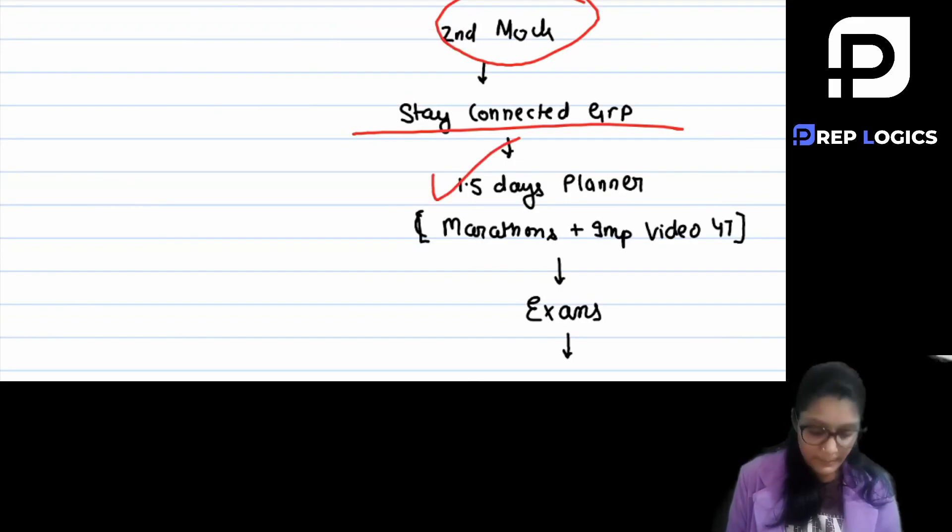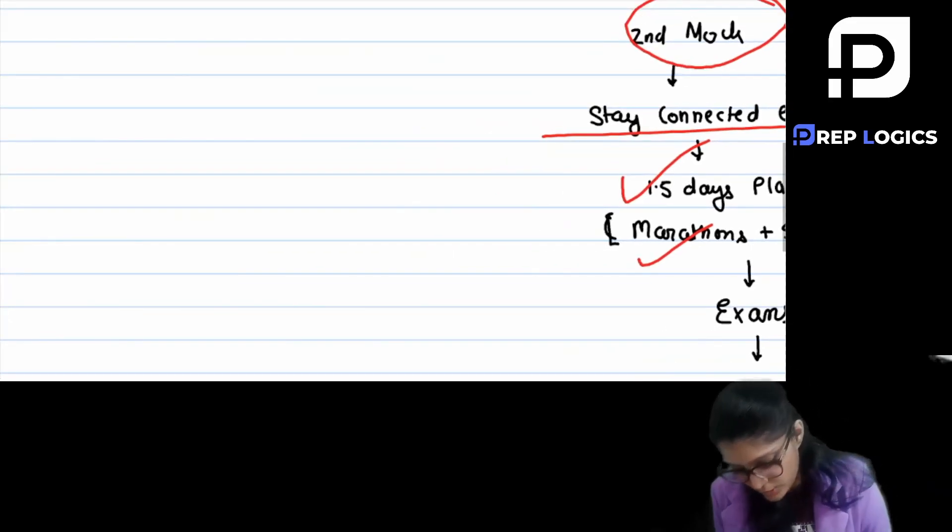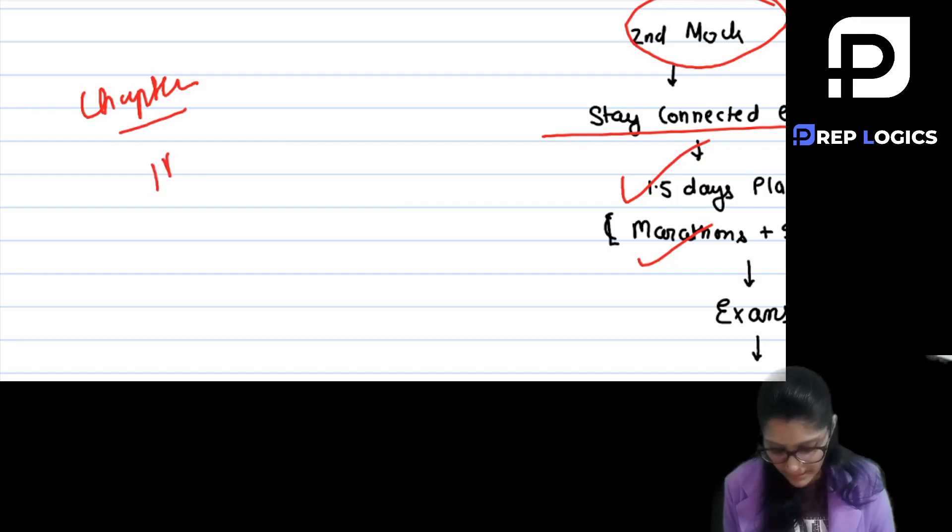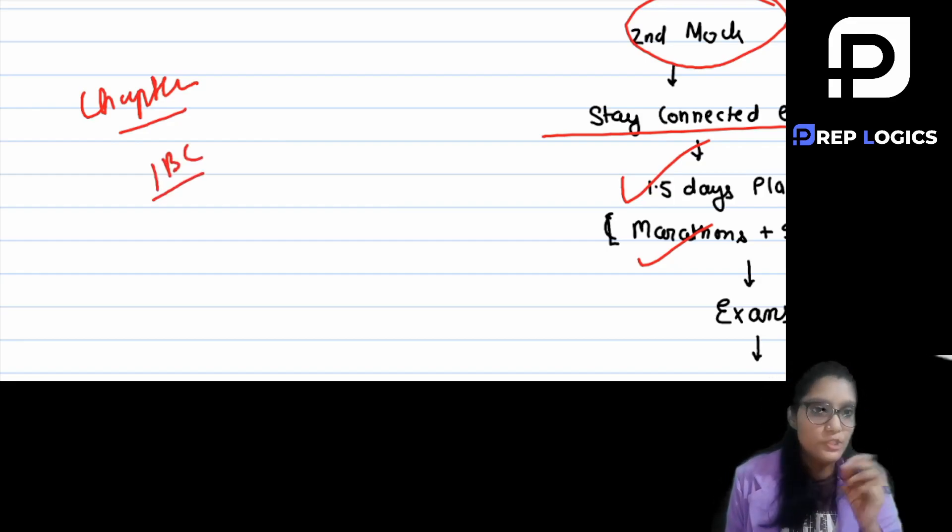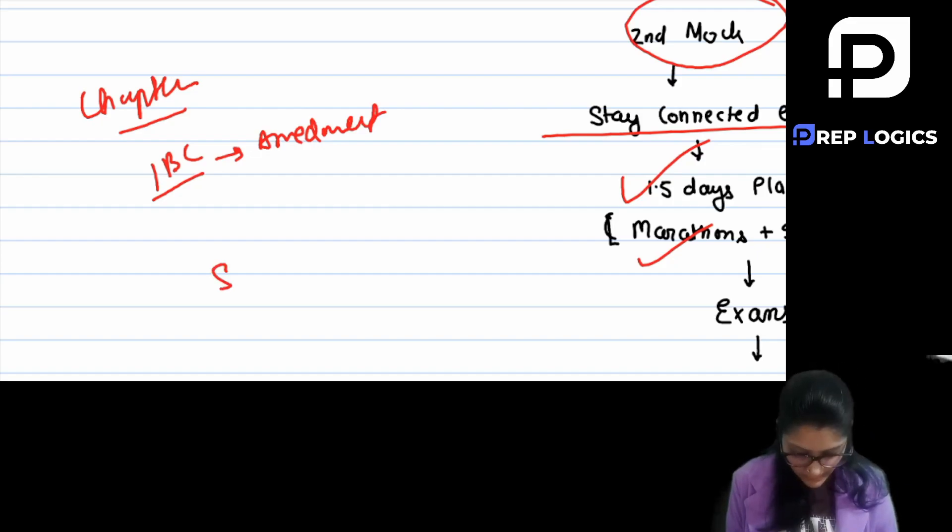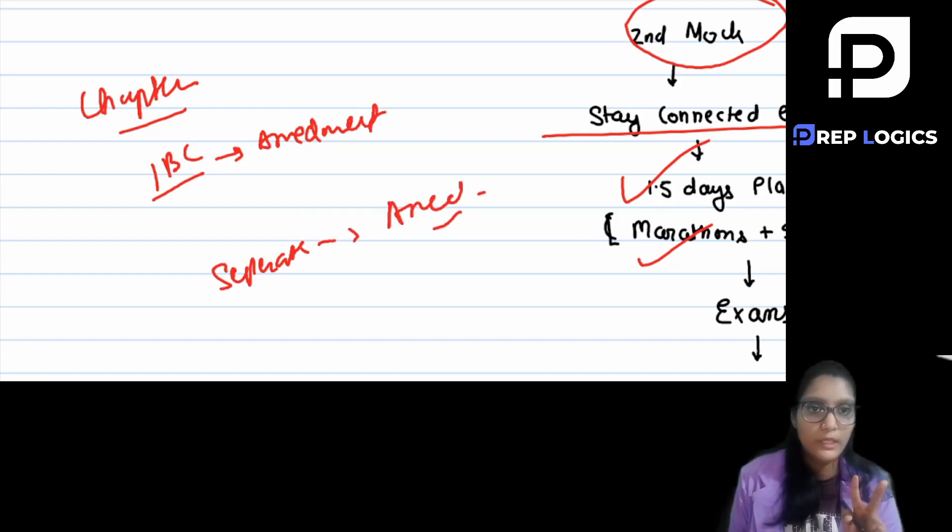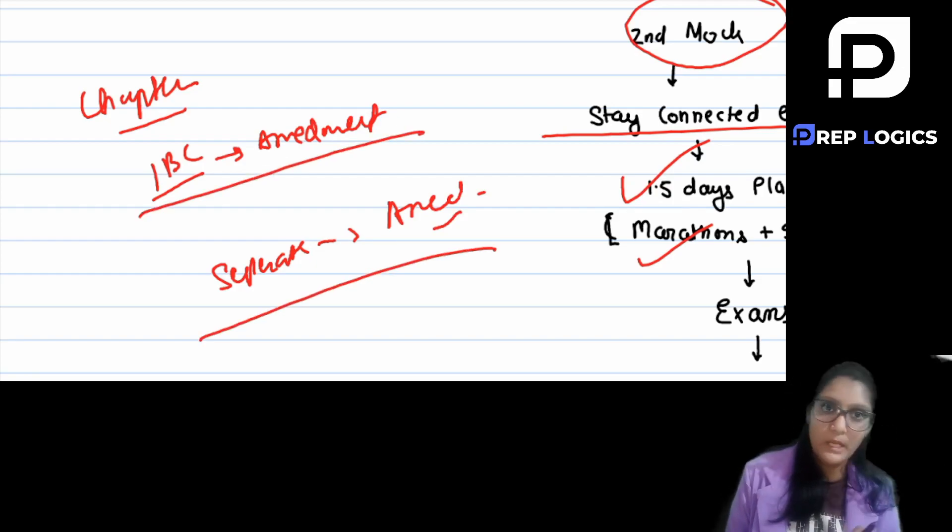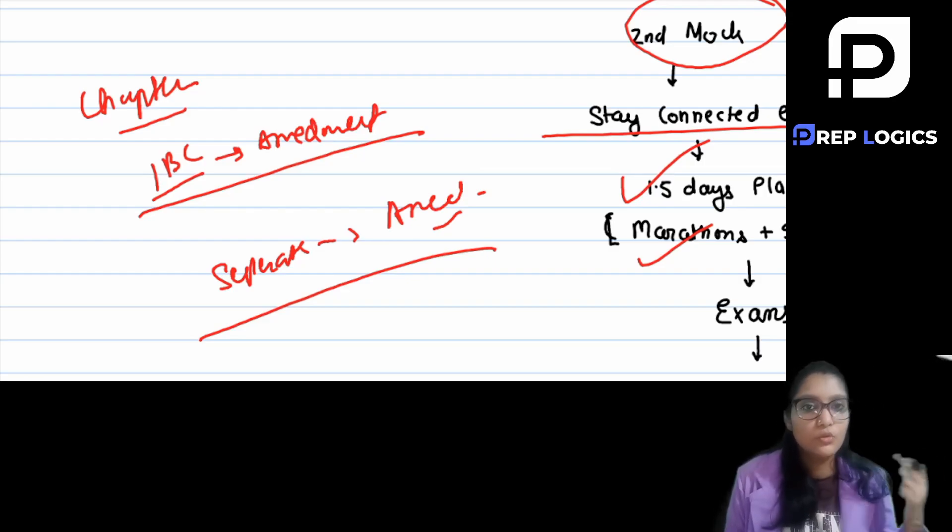We will give a planner of 1.5 days. Marathons is our plan and important topics we might also give you. Plus it will be a different video. Don't think that the amendment is covered or not, all the amendments I will tell you. There is a chapter we have covered in IBC and the amendment there is also covered but we have a separate class in which we have covered the amendments. So the amendments will be two times revision, one is in your chapter and the other separate video you will get one day before examination you can go through if you want to.